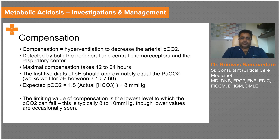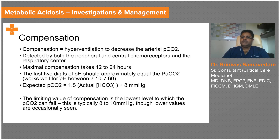The last two digits of the pH should approximately equal the CO₂ for a pH between 7.10 and 7.60. To assess whether compensation is adequate or if there is an additional respiratory disorder, the expected CO₂ is given by the one-and-a-half plus eight rule: expected CO₂ = 1.5 × measured bicarbonate + 8. For example, if the bicarbonate is 10: 1.5 × 10 = 15, plus 8 = 23 — that patient should have a CO₂ of 23.